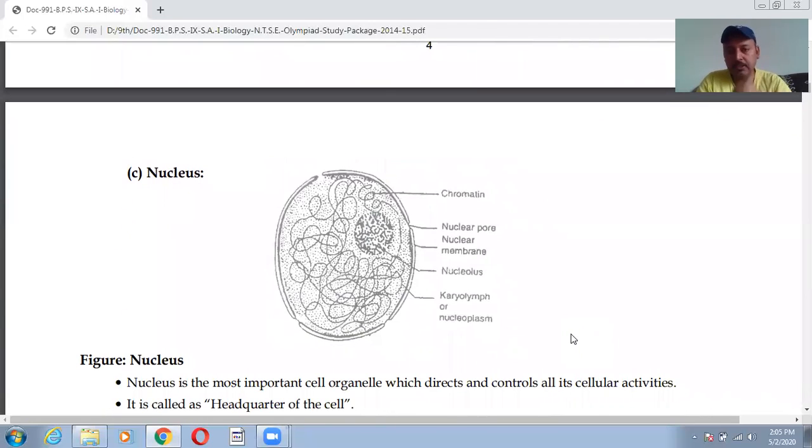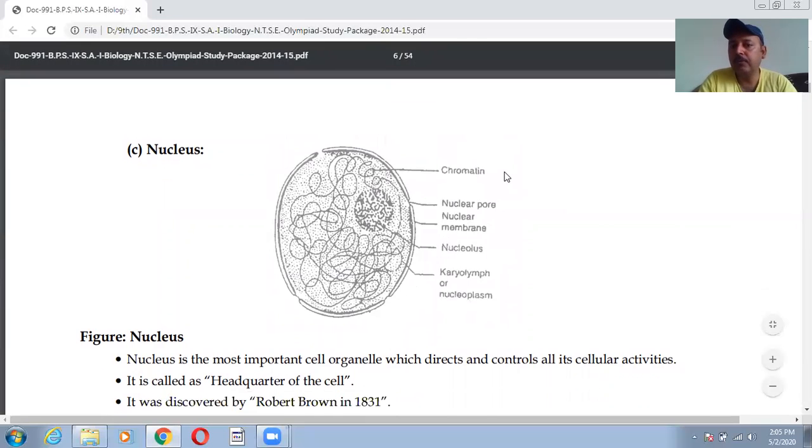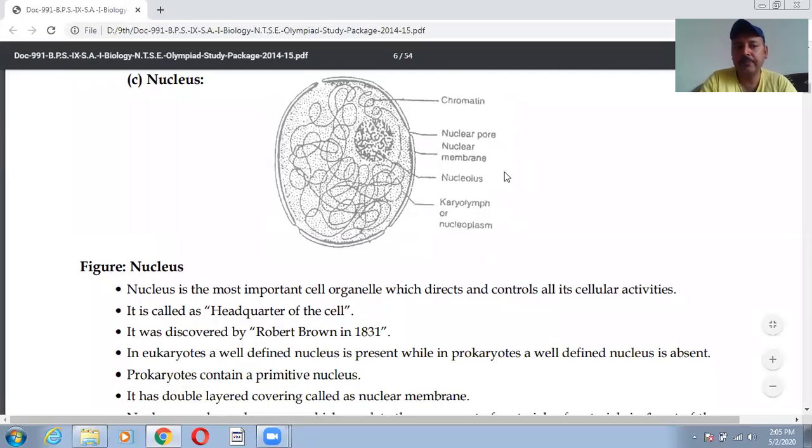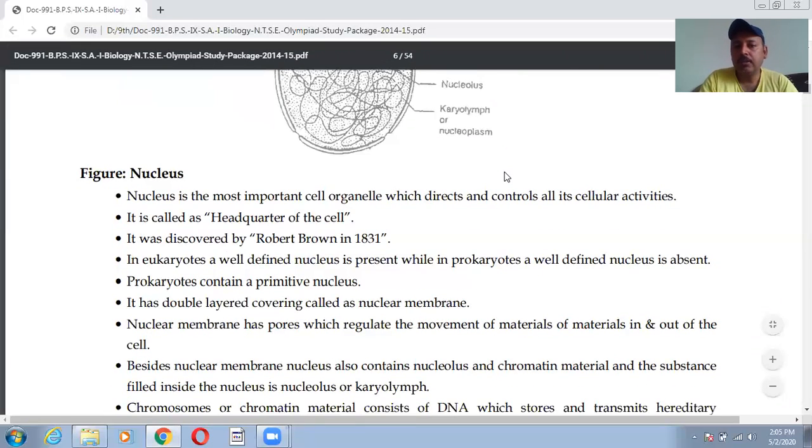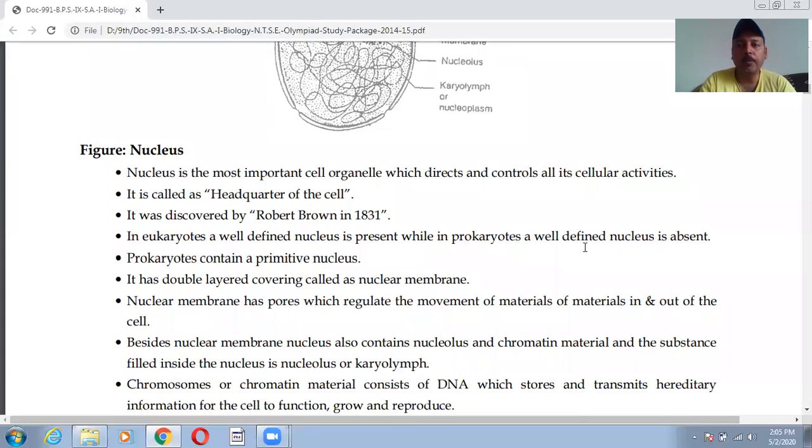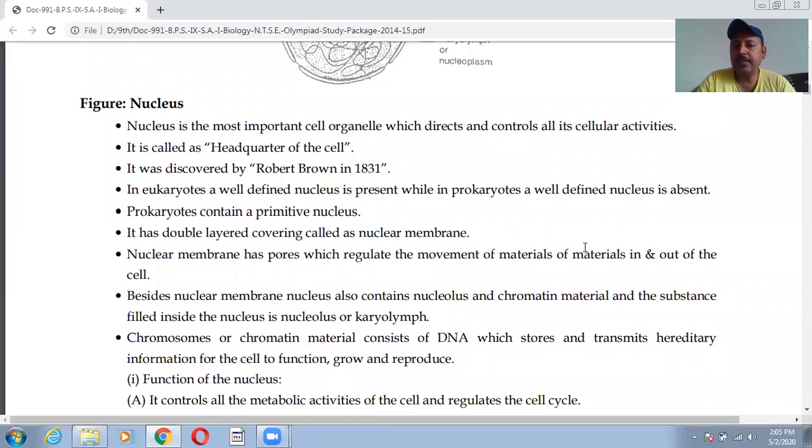Nucleus: we all are familiar with the nucleus. This is the structure of nucleus. You can see chromatin, nuclear pore, nuclear membrane, nucleolus, nucleoplasm. So we know that nucleus is known as the brain of the cell. Most important cell organelle which controls all the cellular activity, headquarter of the cell. It is also called, discovered by Robert Brown in 1831. Well-defined nucleus is present in eukaryotes while in prokaryotes is absent. Prokaryotes contain a primitive nucleus.